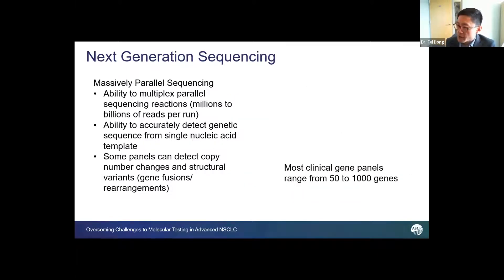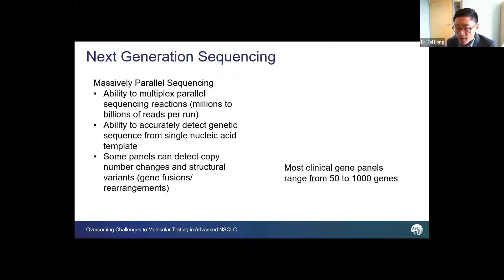Increasingly, laboratories are adopting a panel testing approach by employing next-generation sequencing assays. Next-generation sequencing, also called massively parallel sequencing, allows millions to billions of individual DNA molecules to be sequenced simultaneously depending on the platform. Multiple patient specimens are also pooled into a single sequencing run to reduce overall cost. These panels are mostly designed to detect sequence alterations, but some panels can also detect copy number changes and structural variants including gene fusions. Clinical gene panels typically range from as few as 50 genes to as many as a thousand or more.